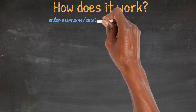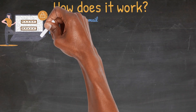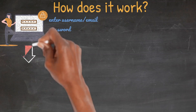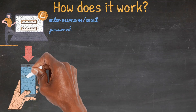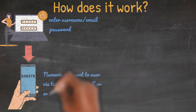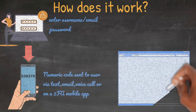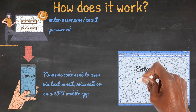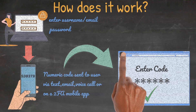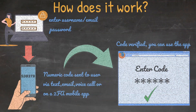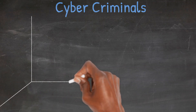How does it work? A user enters a username or email and password combination. The user is then presented with the second login form where they have to enter a passcode. The code to be entered is sent via text, email, voice call, or on a 2FA mobile application such as Google Authenticator or Microsoft Authenticator. The user then enters the authentication code to gain access to the application.